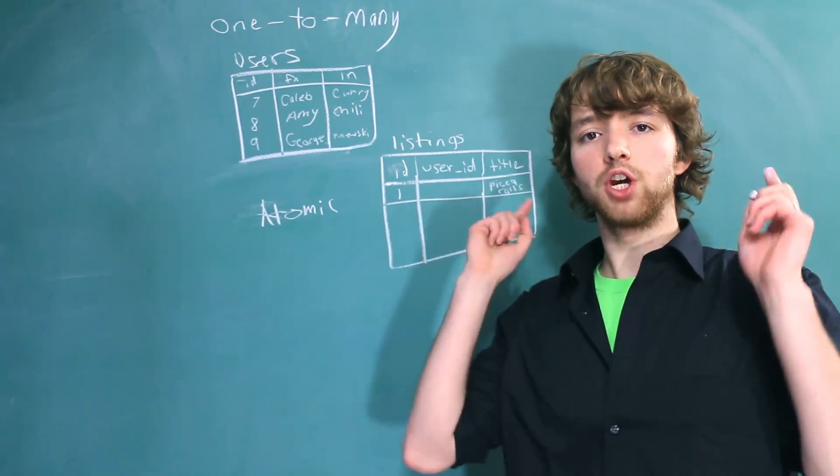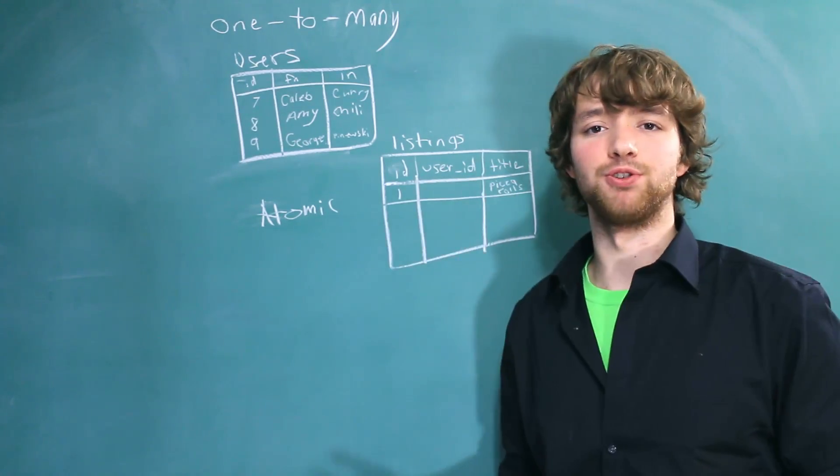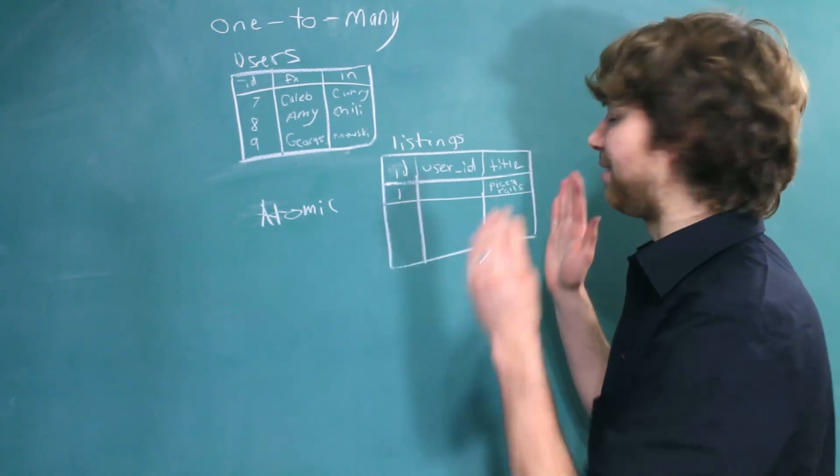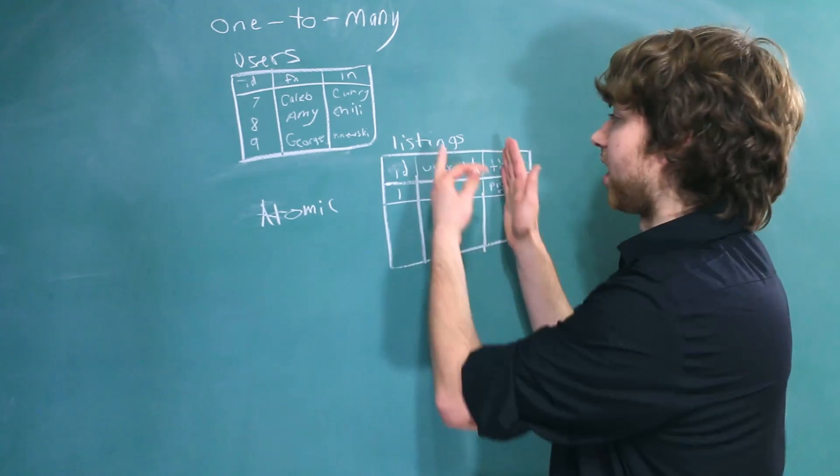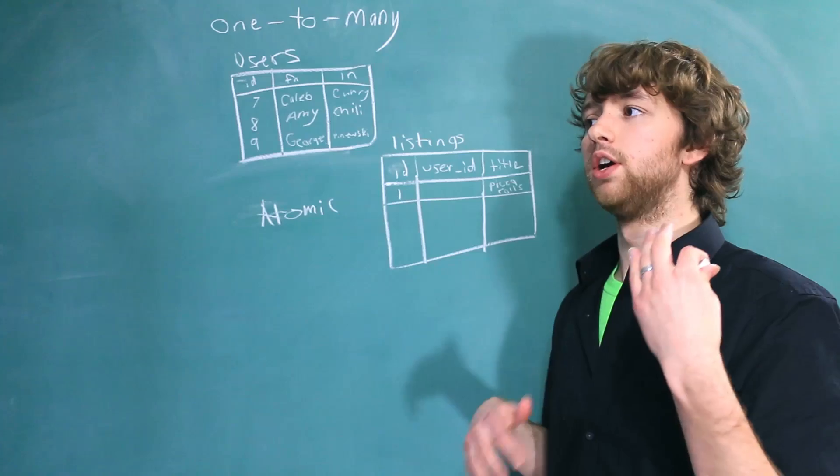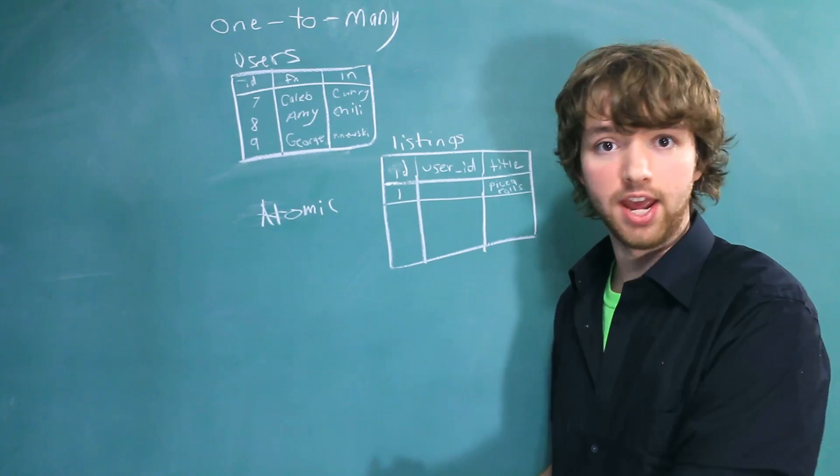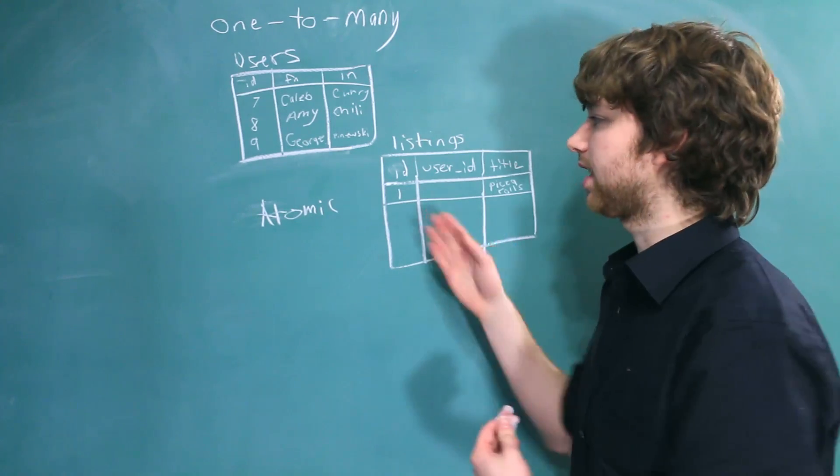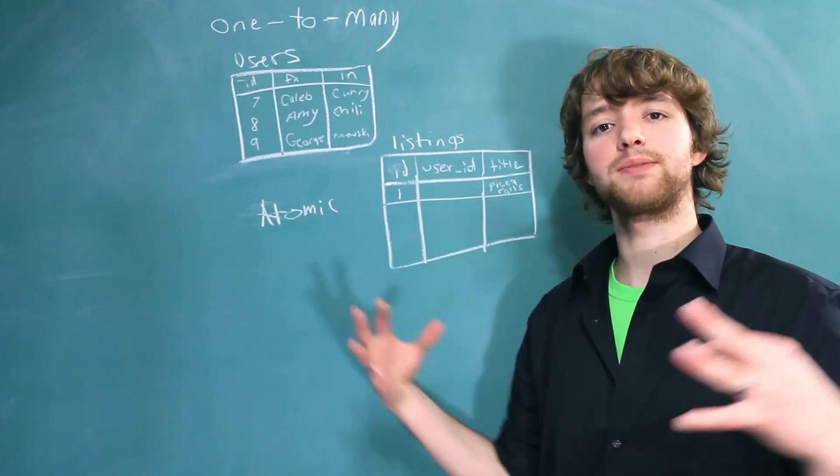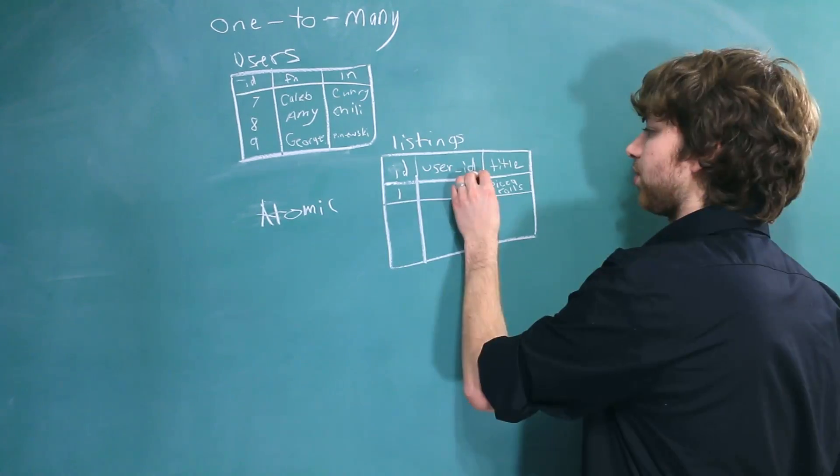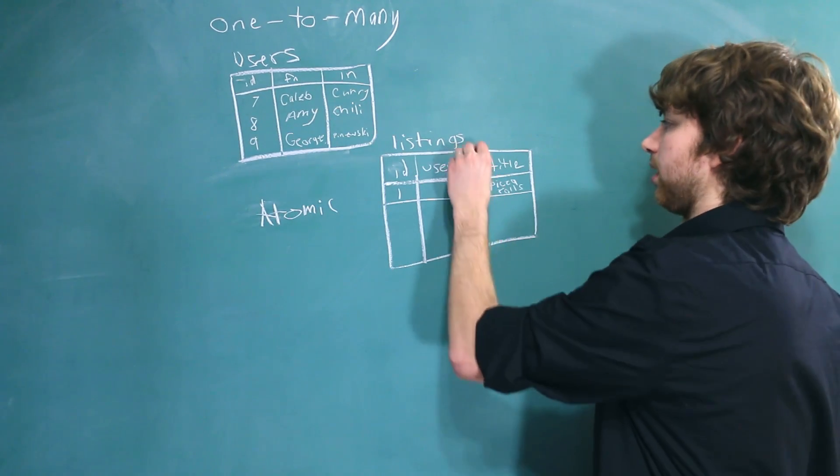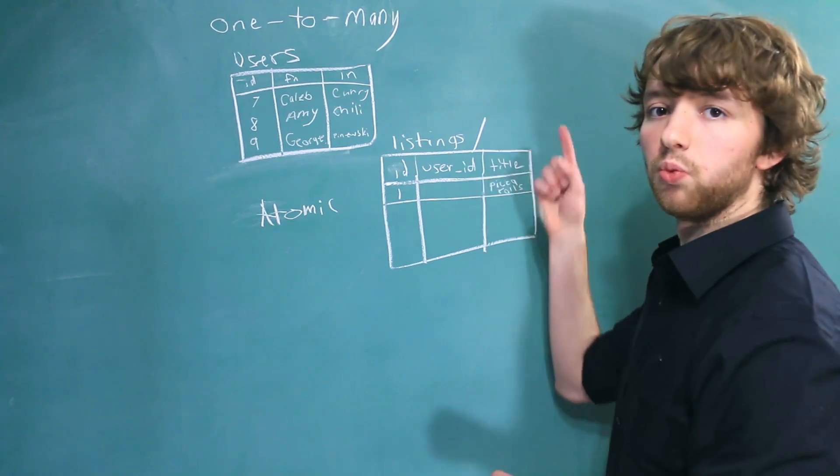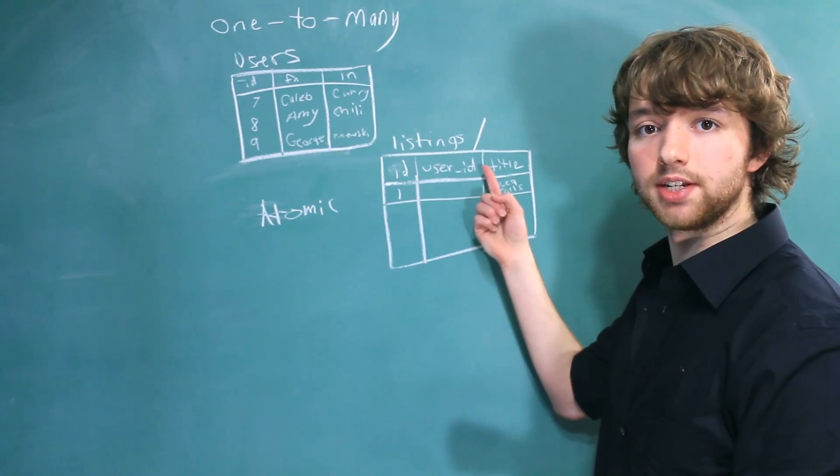So a user ID, we only want one. We don't want to have two user IDs, and we don't want to have a half a user ID. And we only want to store user IDs in this column. We don't want to store user IDs and the user's name or anything like that. Everything has to be atomic, the smallest piece that makes sense. So in this situation, the column is atomic. That's because we're only storing one thing in this column, the user ID.